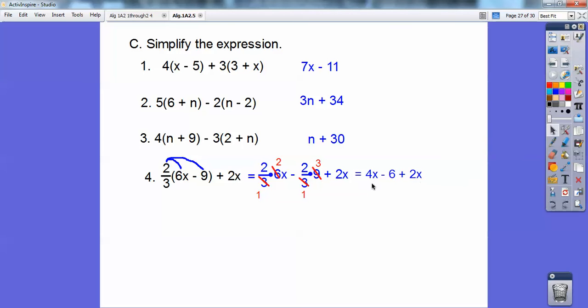Now I'm going to go ahead and combine like terms. 4x, there's a plus sign in front of this 2x. So it becomes 6x and then the minus 6 right there. All right. And that's it, you guys. Good job.